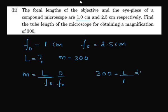D is 25, the least distance of distinct vision, 25 cm divided by fe that is 2.5 cm. All quantities are in cm only.